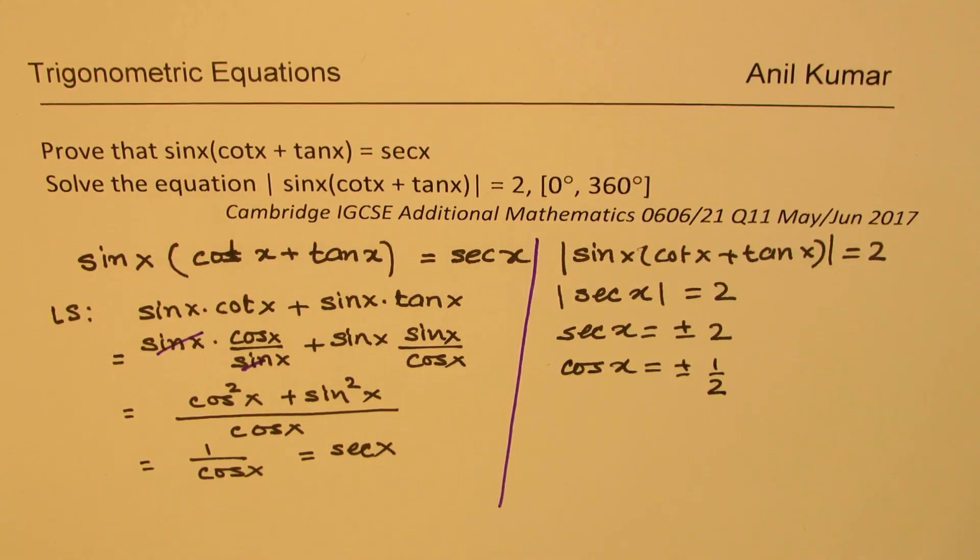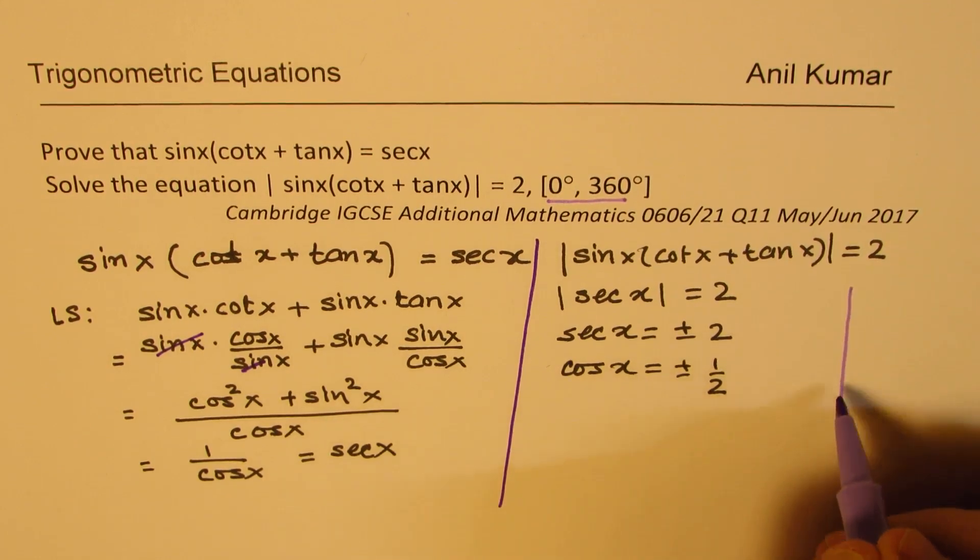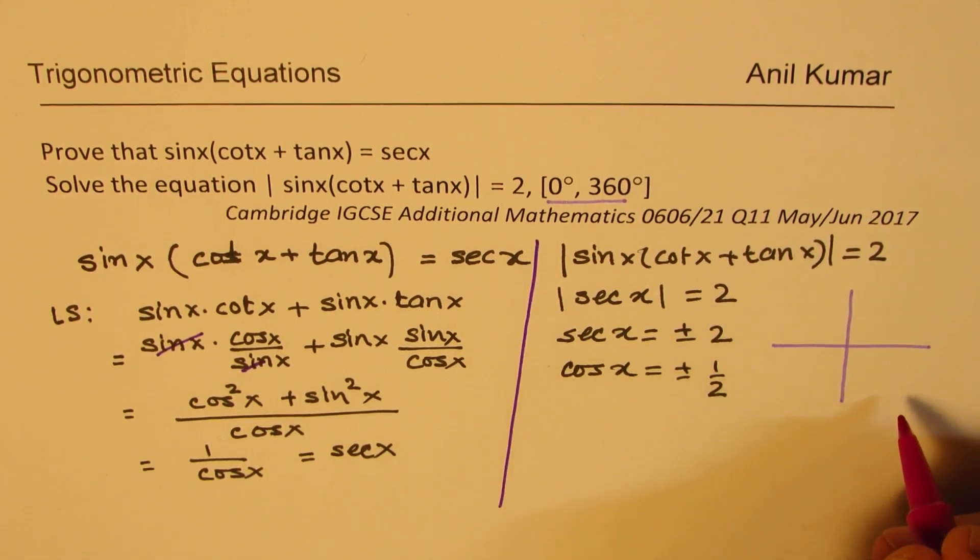secant x being plus and minus 2 basically means cos x equals to plus and minus of half. So we are looking for the cos x value of half within the domain 0 to 360 degrees.